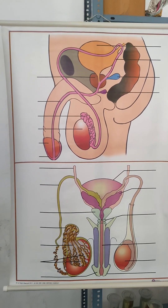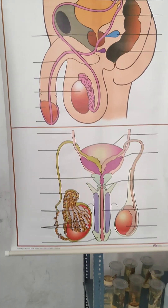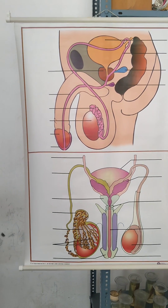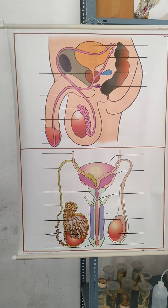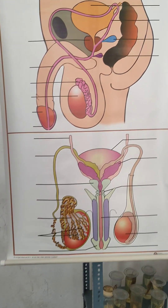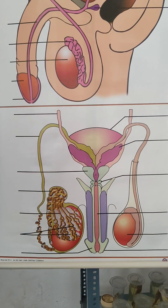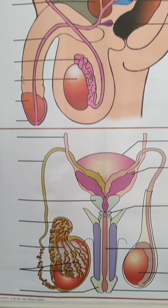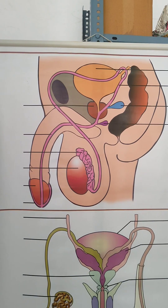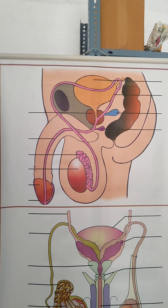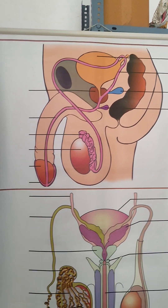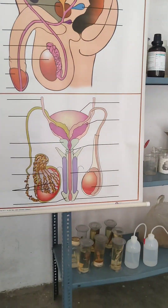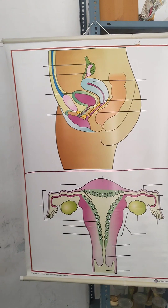Then, human urogenital system — that is, the male system. Already in the second year, you prepared for a long answer question on the male reproductive system. The parts include urethra, epididymis, and testis.